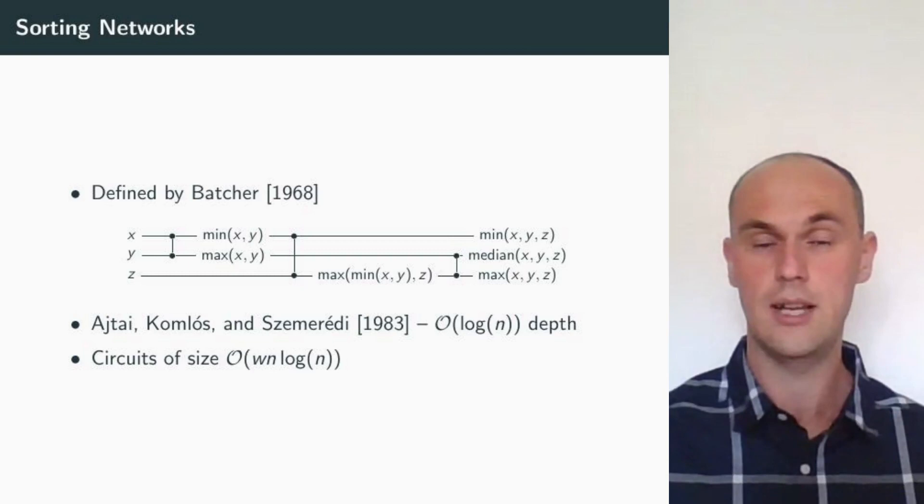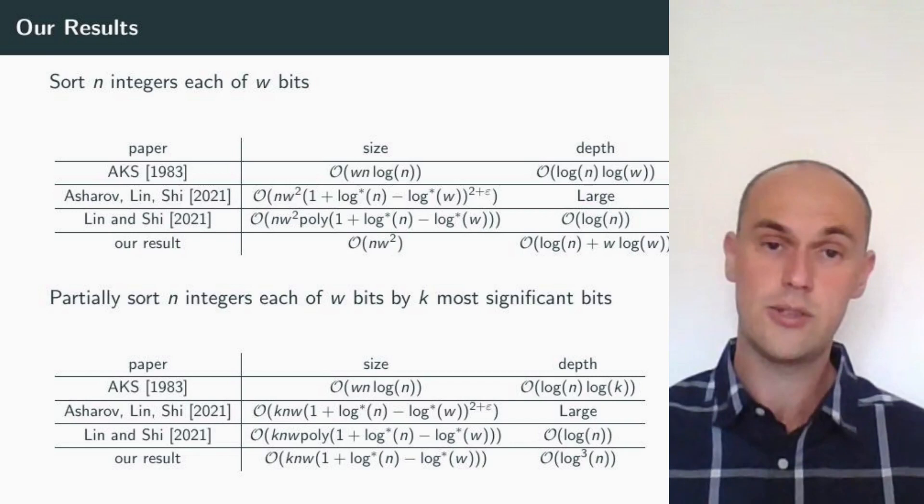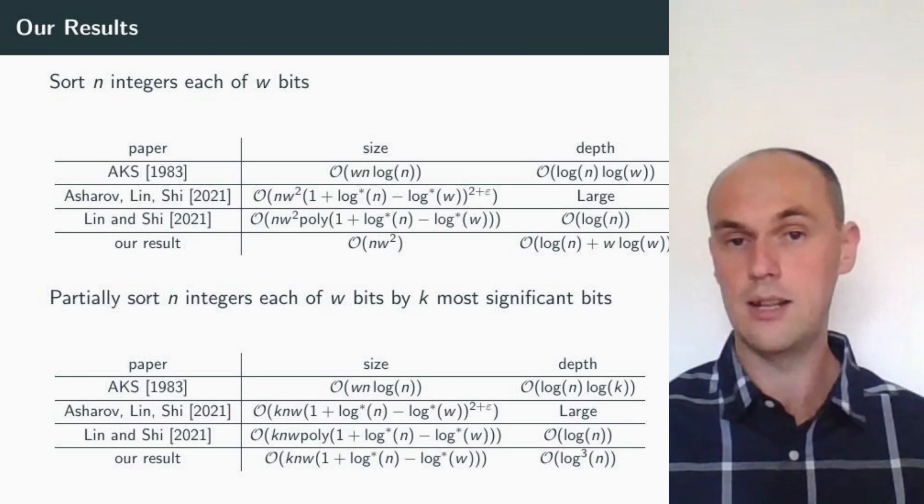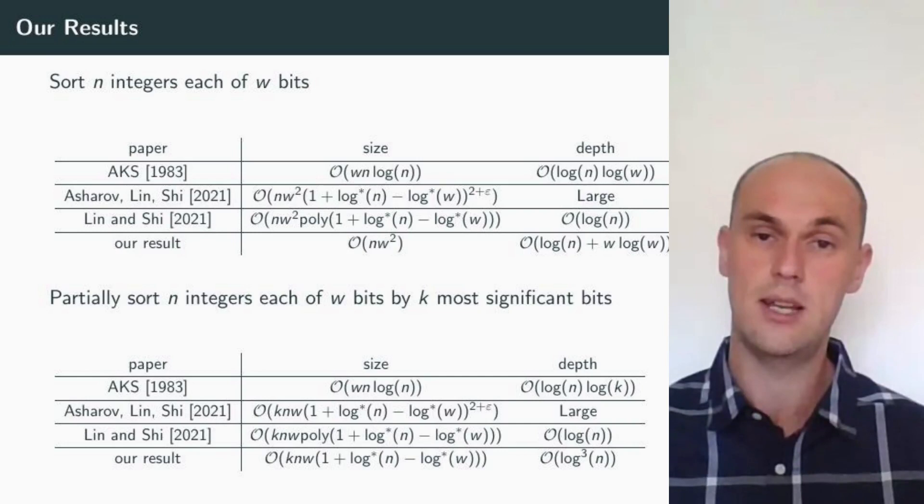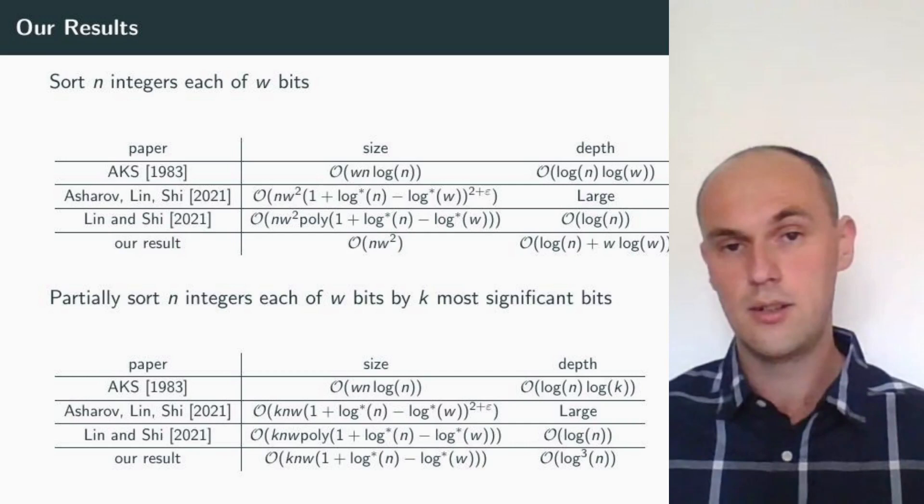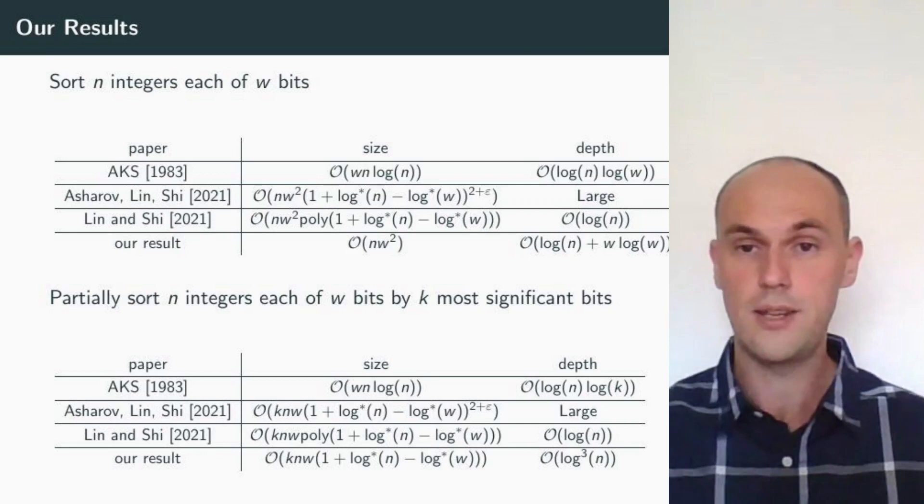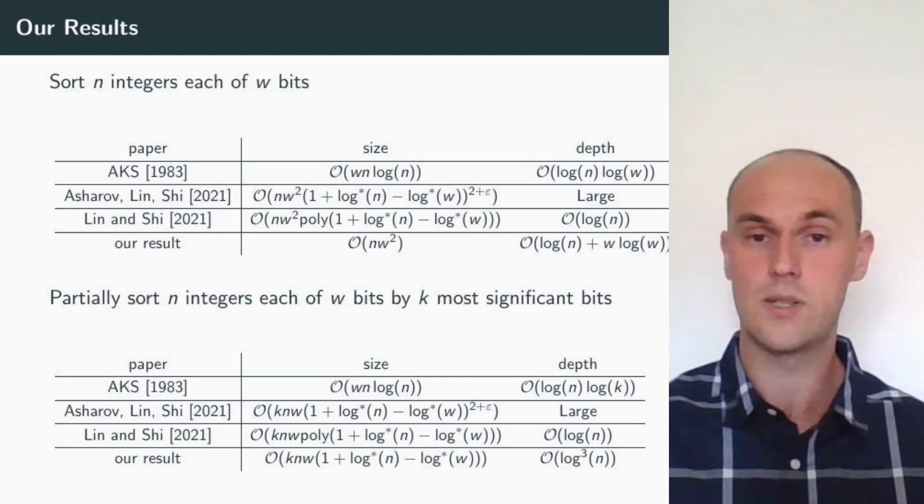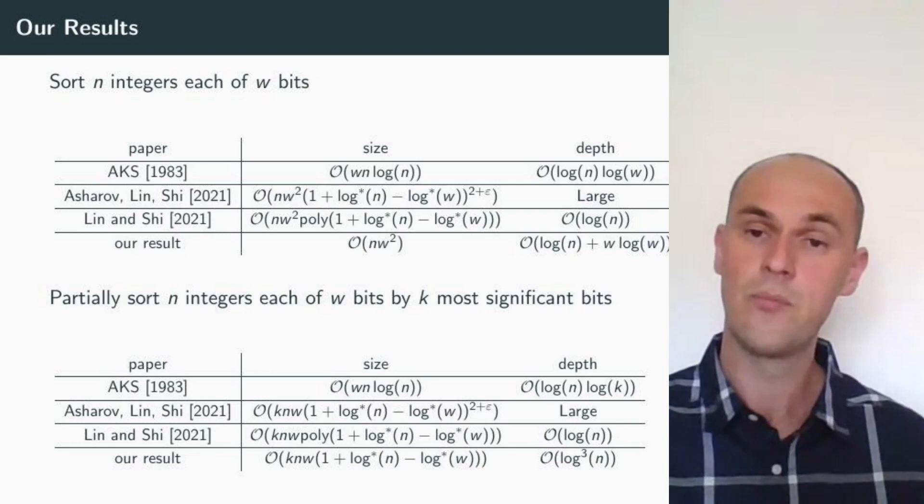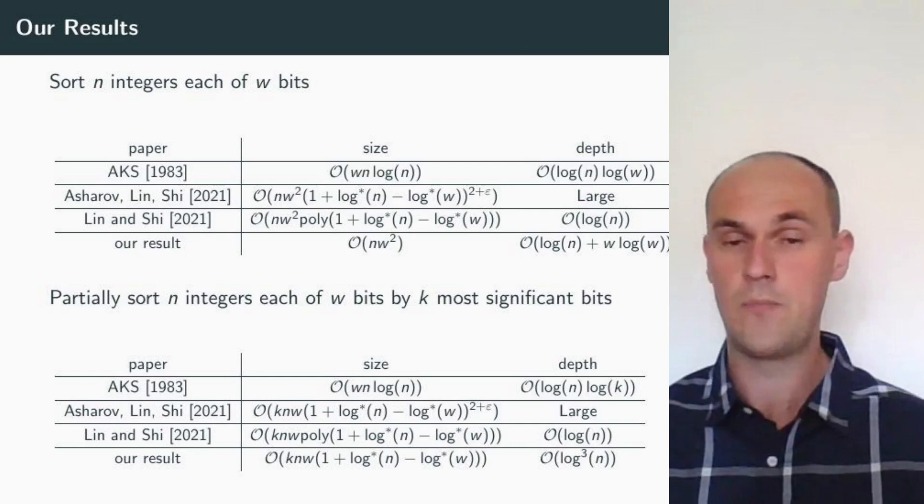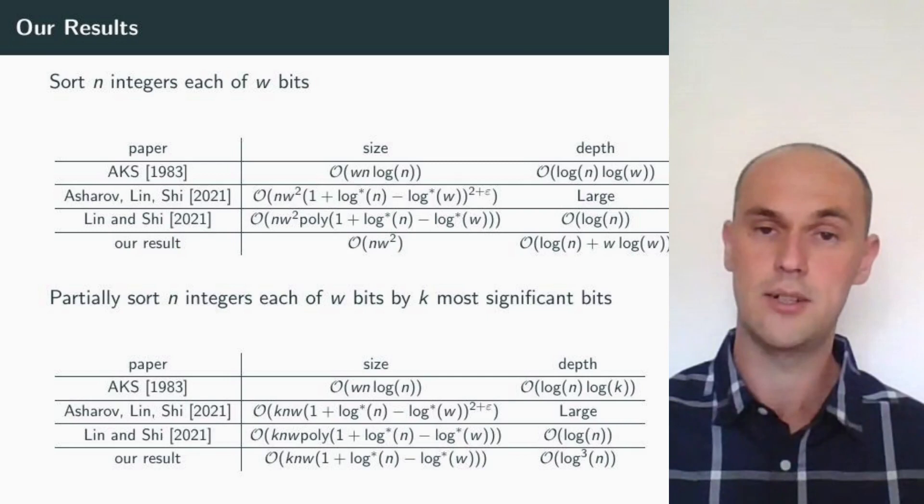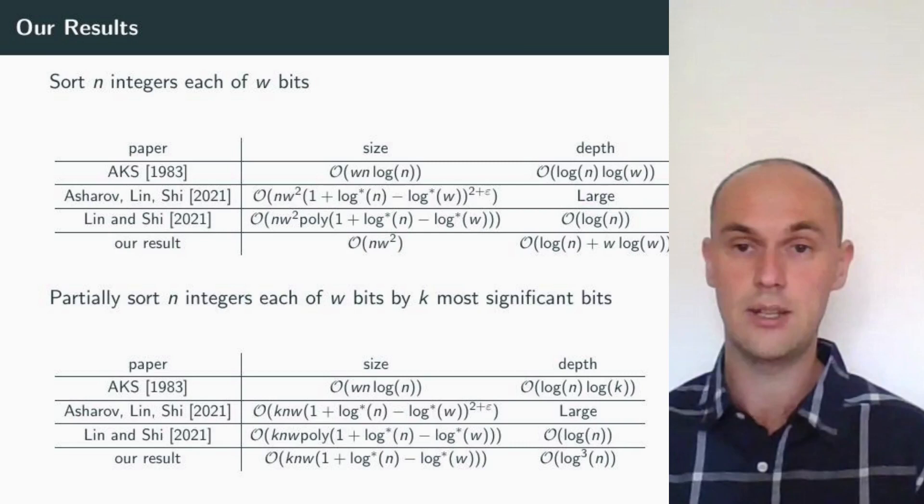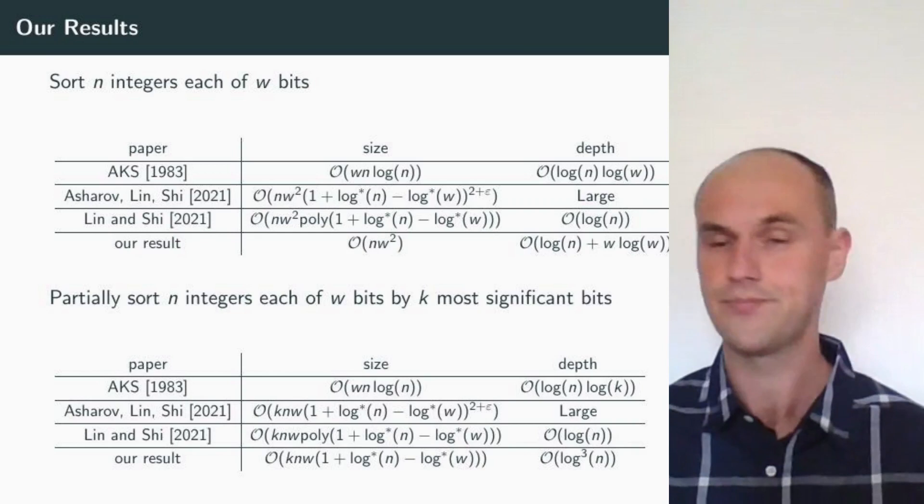This was noticed already by Asharov, Lin and Shi in their paper, and they gave sorting circuits of size n w squared times a term with iterated logarithms squared. But their depth was relatively large. In a subsequent work, Lin and Shi construct circuits of size n w times polynomial in the iterated logarithm, but logarithmic depth. Our result is completely getting rid of the term with iterated logarithms and having circuits of size just n w squared, while preserving polylogarithmic depth of log n plus w log w.